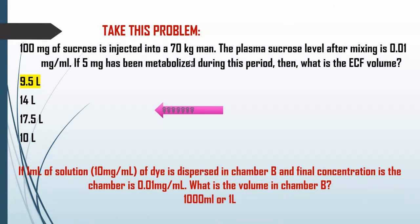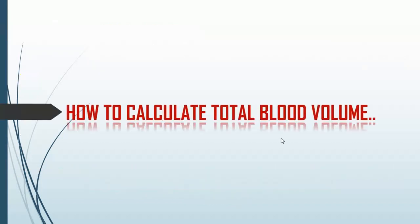Here is another example: 1 mL of solution containing 10 mg/mL dye is injected into chamber B. The final concentration in the chamber is 0.01 mg/mL. What is the volume in chamber B? Mass injected = 1 mL × 10 mg/mL = 10 mg. Nothing was excreted. Volume = 10 / 0.01 = 1,000 mL. That is how you calculate fluid volume in a compartment using the dilution principle.